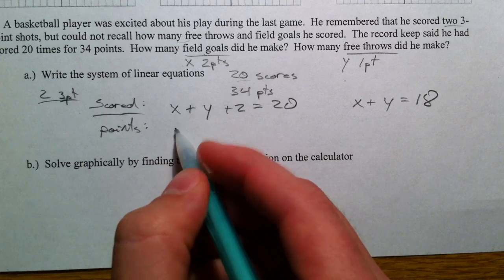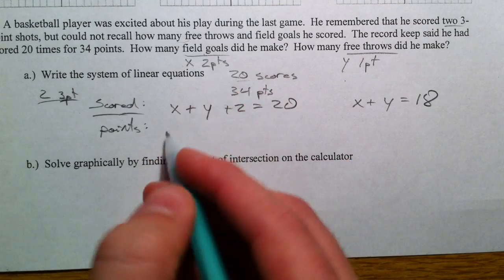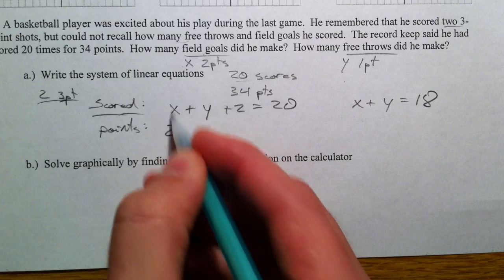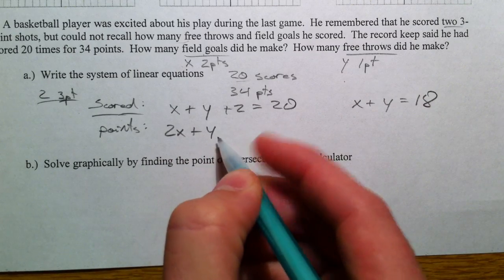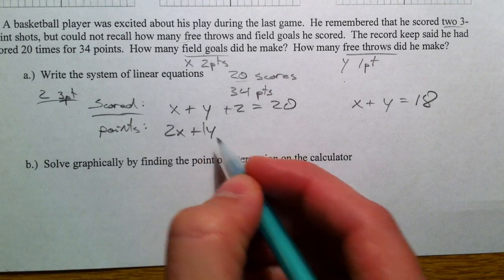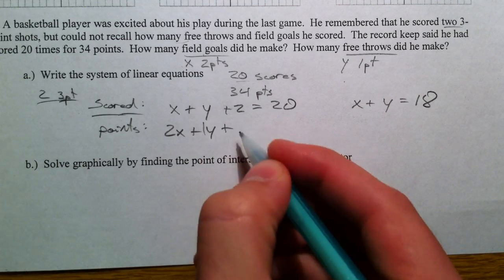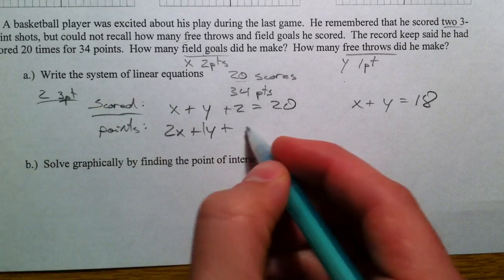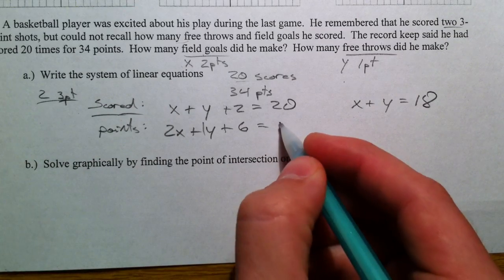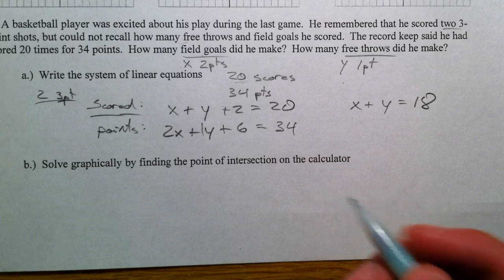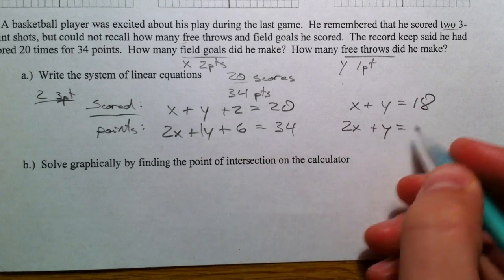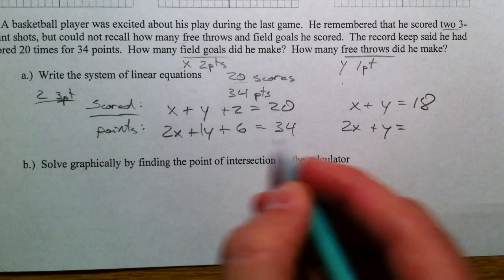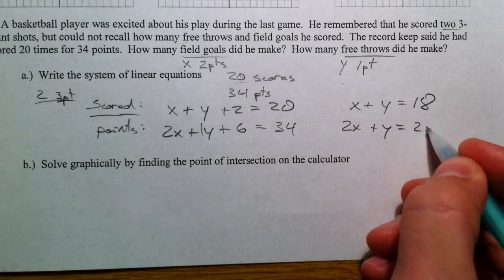And then for how many points he scored, field goals are worth two points each, so 2x, plus y free throws worth one point each. And then two three-pointers, that's a total of six points, equals 34 points altogether. So 2x plus y equals, and let's subtract the six over, so that's 28.